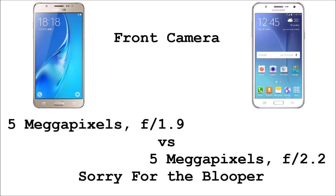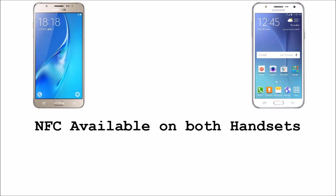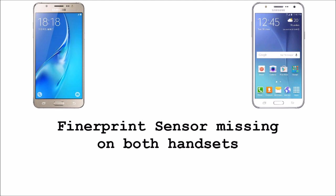As for the front camera, the J5 2016 got a 5MP camera with aperture f/1.9 while the J5 2015 got a 5MP camera with aperture f/2.2, so this means the J5 2016 is going to give you better low-light selfies. Both handsets got front LED flash too. As for NFC, it is available on both phones, but the fingerprint sensor is missing on both phones.